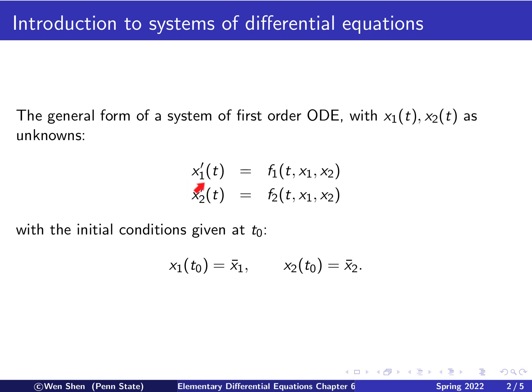x1 prime, prime meaning derivative with respect to t, equals to some function f1, depending on t, x1 and x2. And x2 prime of t equal to another function, depending on t, x1 and x2.